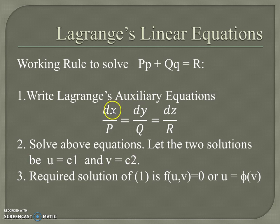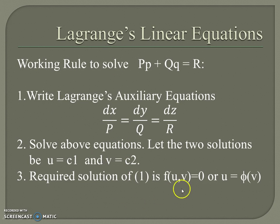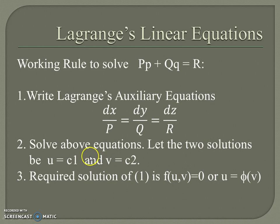We select two fractions for which we can find the solution in an easy way. The required general solution is given by f(u, v) = 0, where u and v are the two solutions obtained in step 2.